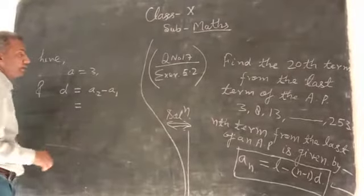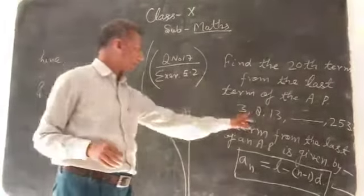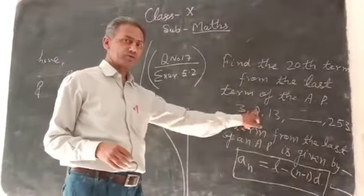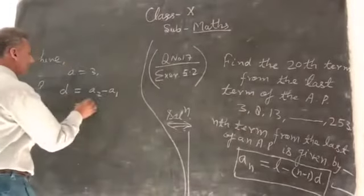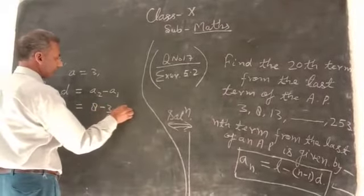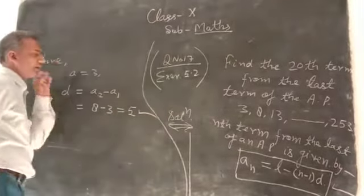That is equal, A2 comes and A1 comes. So A2 minus A1 equal 5.